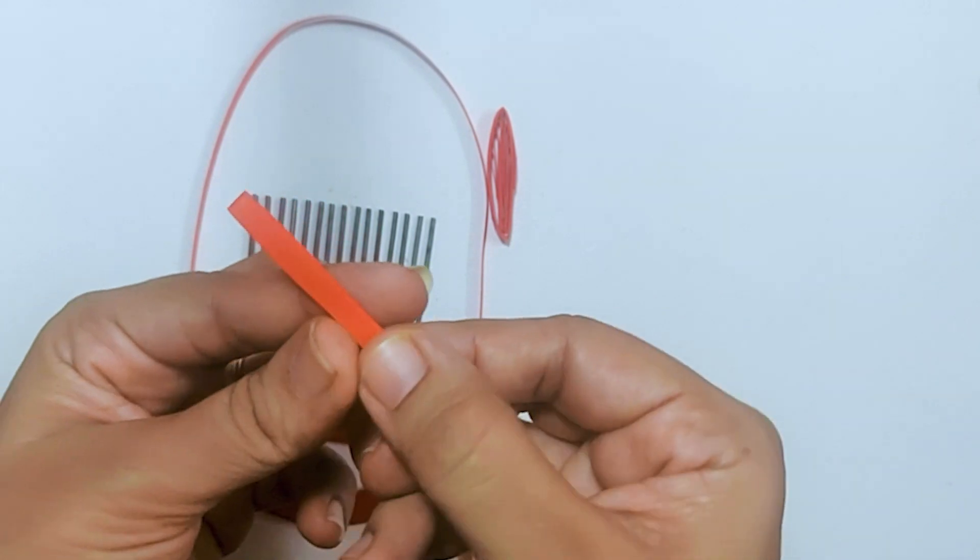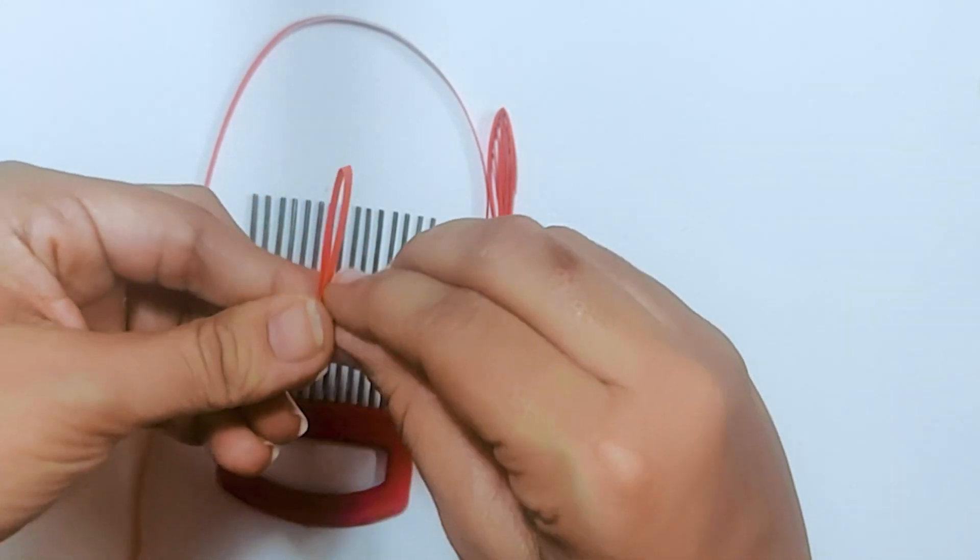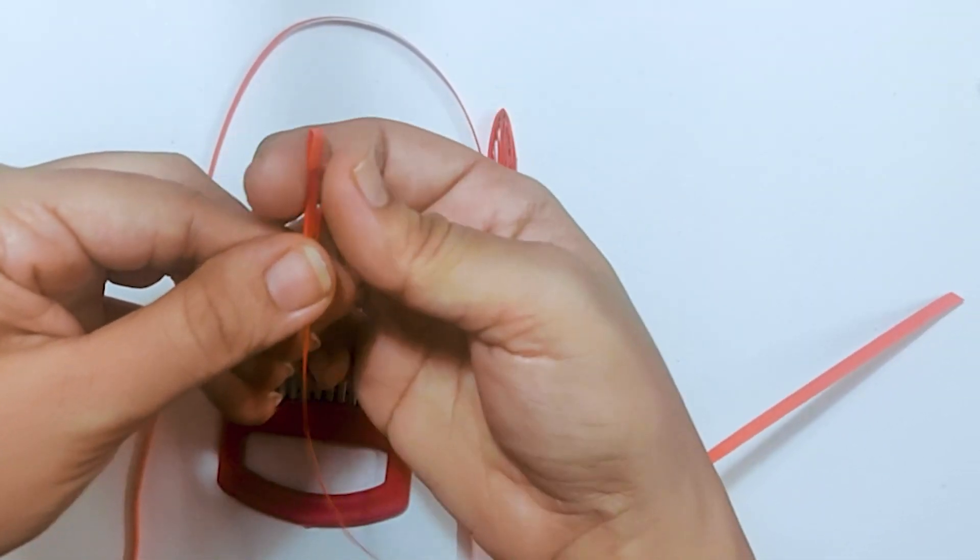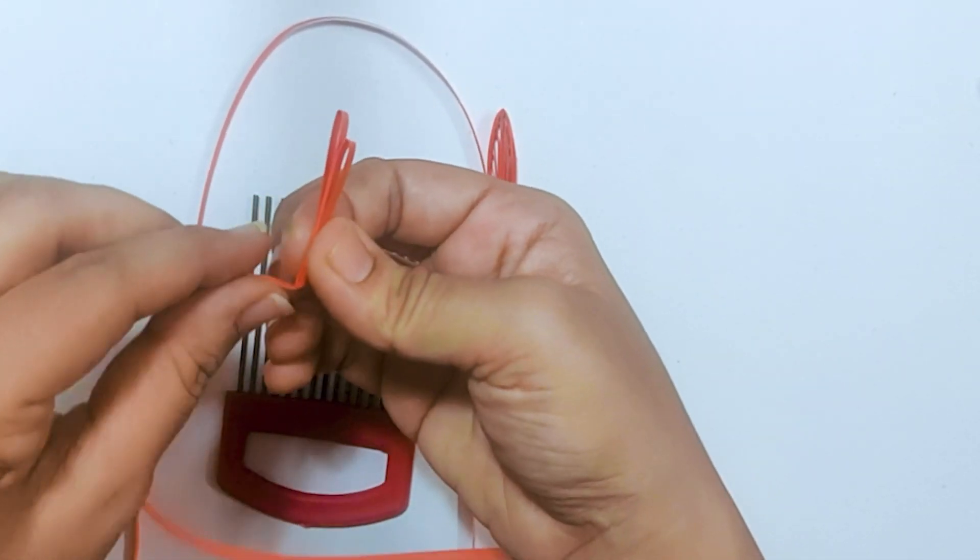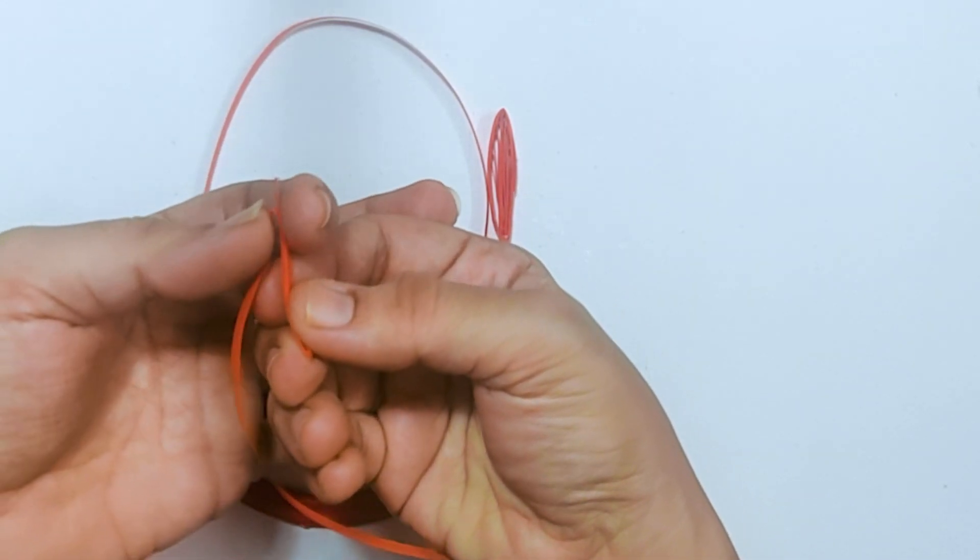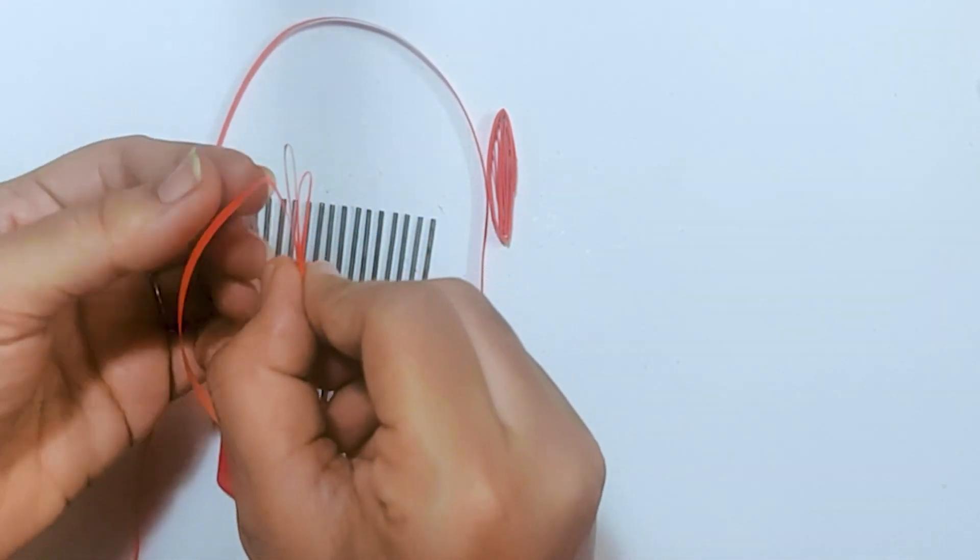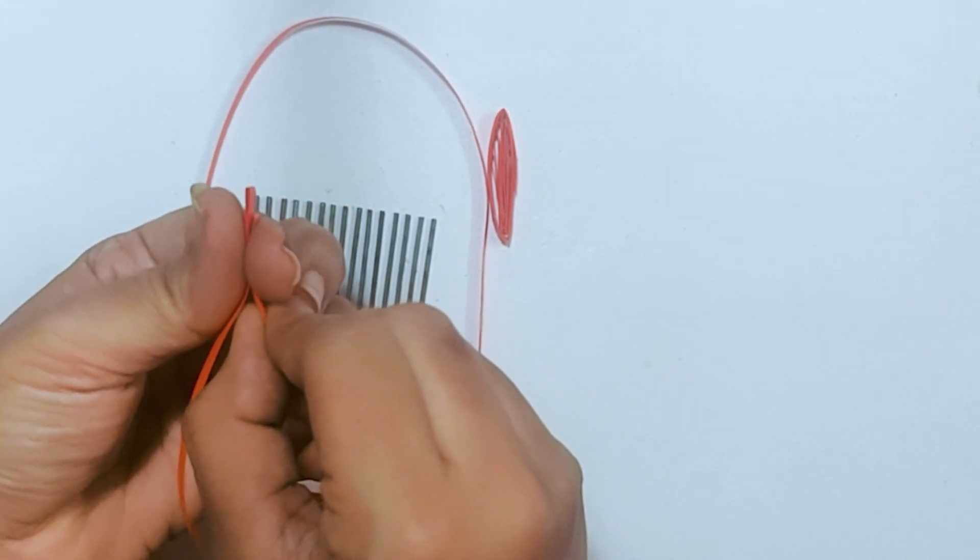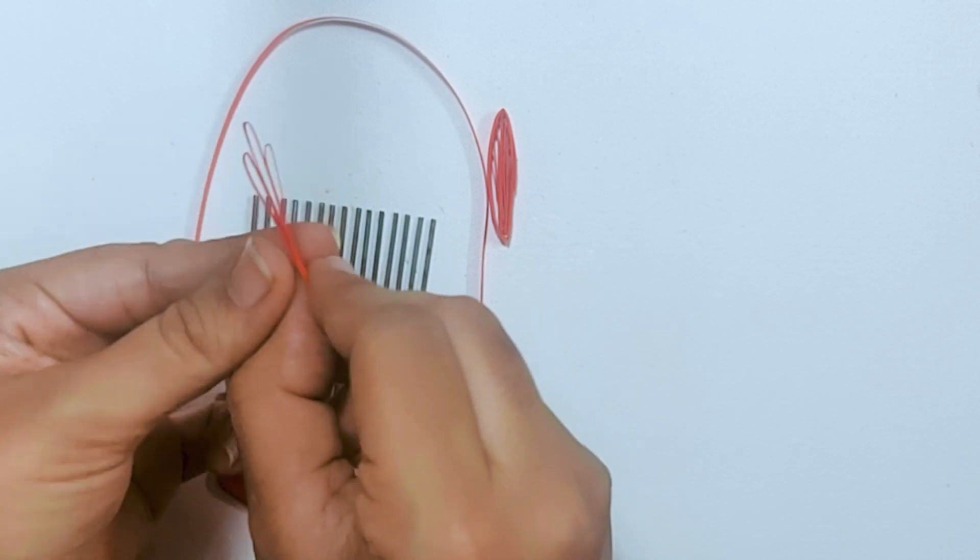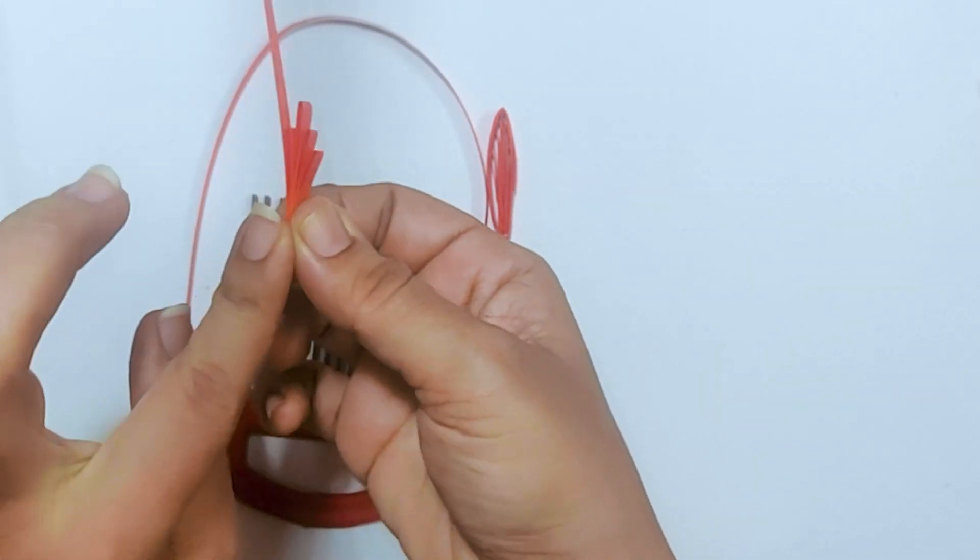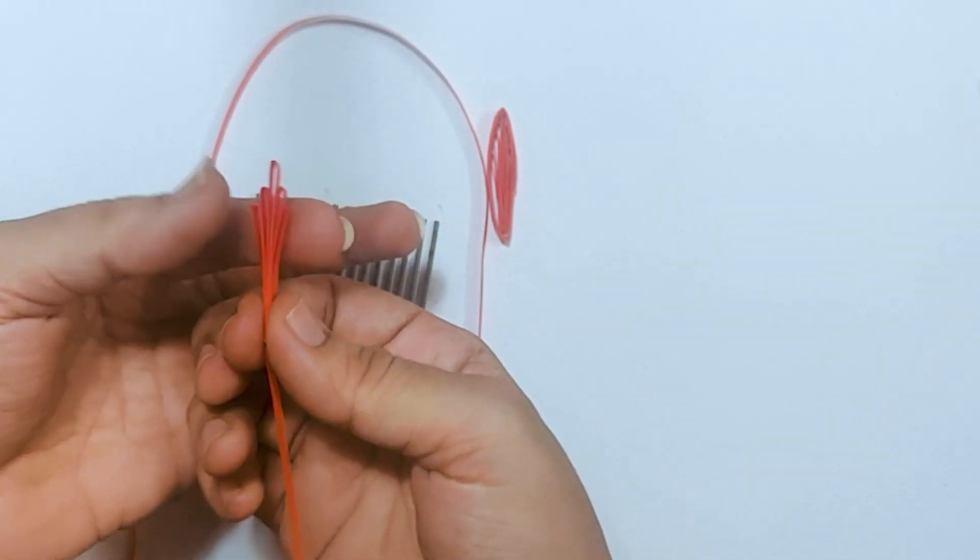Once you do this, fold it on the right side to a lesser size of the first petal, then to the left, then again to the right, again to the left. Continue to do this till the end of the quilling strip.